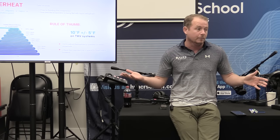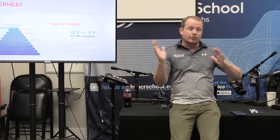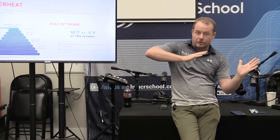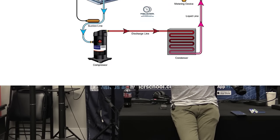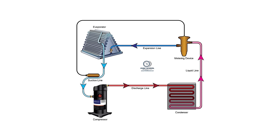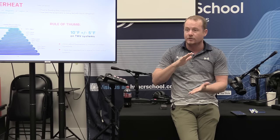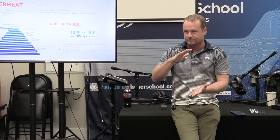We want a cold evaporator coil, but we don't want it too cold. Why not? It could freeze up. We also don't want it colder than it needs to be, because when we talk about compression ratio, that means lower pressure gas going back to the compressor. If it is lower pressure, that also means it is lower density — it's lighter.